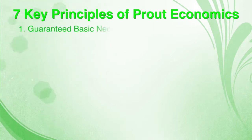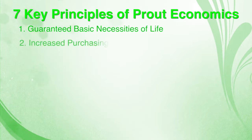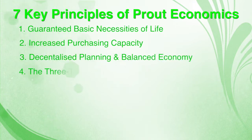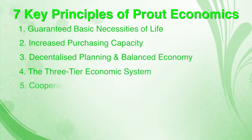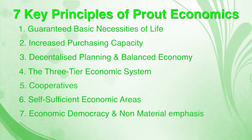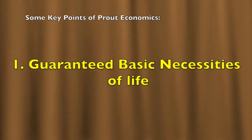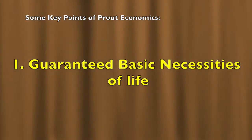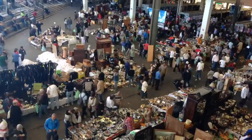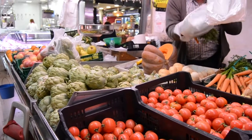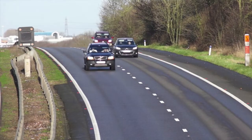Prout's economic system guarantees the minimum requirements of life to everyone. In most situations, this includes food, clothing, accommodation, medical care, transport, and education.